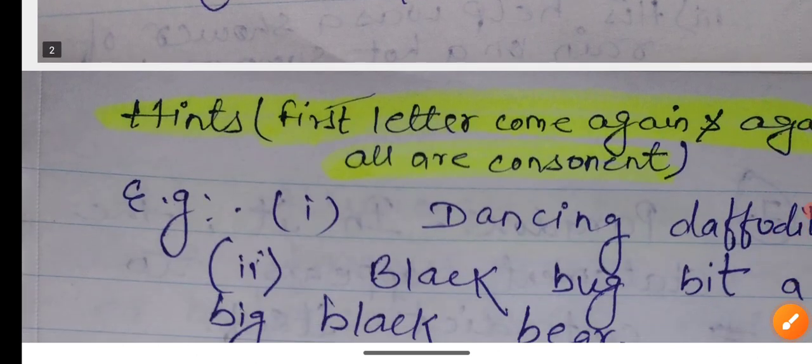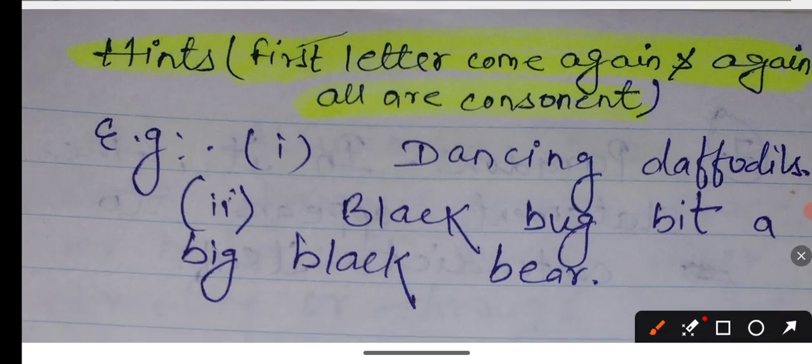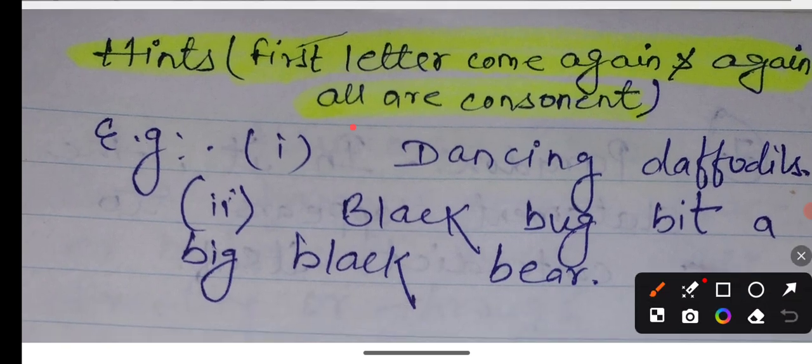Let's take examples. The words that are repeated: the first letter comes again and again. All are consonants. When the first letter, which is a consonant, repeats in sentences, when words repeat and consonant sounds are produced, that is known as alliteration. Like 'dancing daffodils'. The 'D' sound starts first letter.